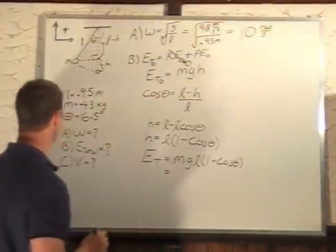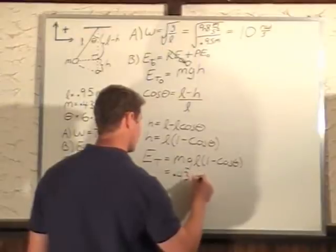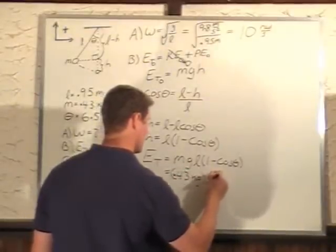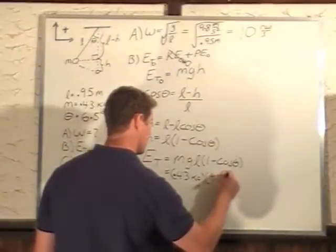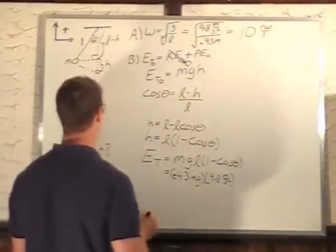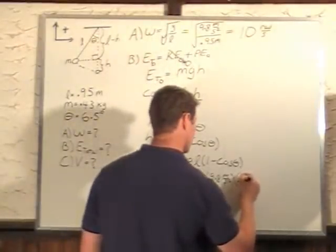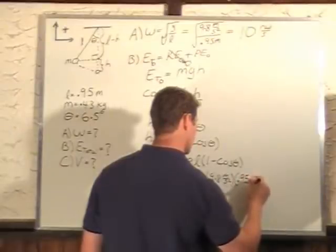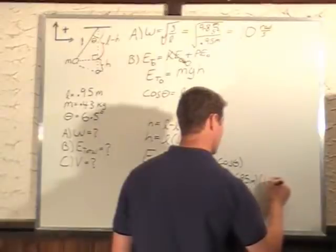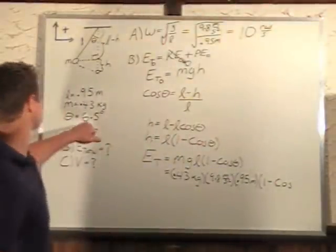m is 0.43 kilograms, g is 9.8 meters per second squared, l is 0.95 meters, and we have 1 minus cos of our theta which is 6.5 degrees.